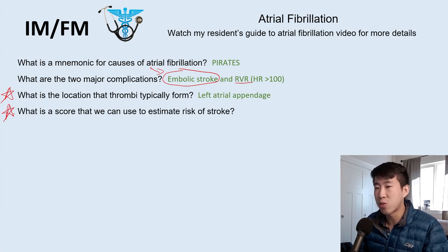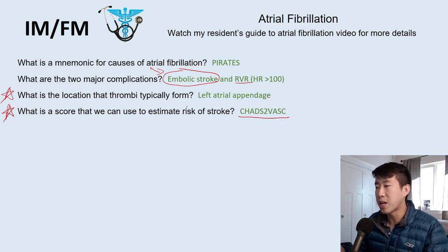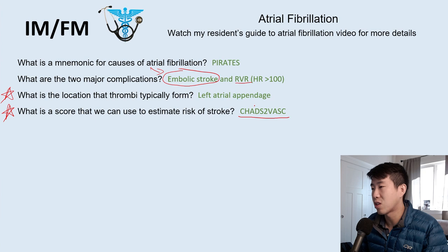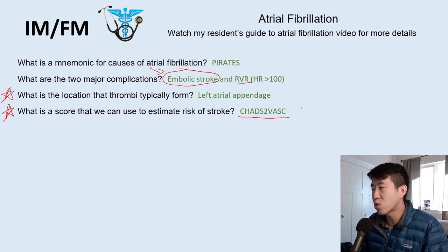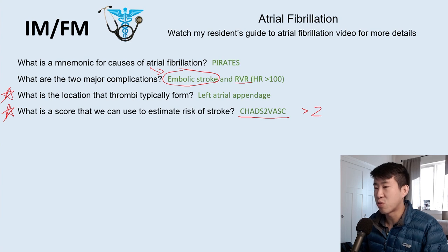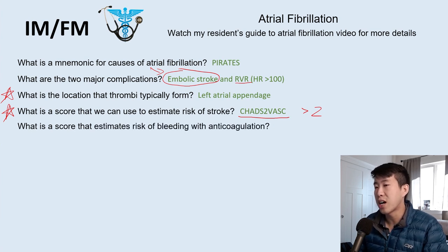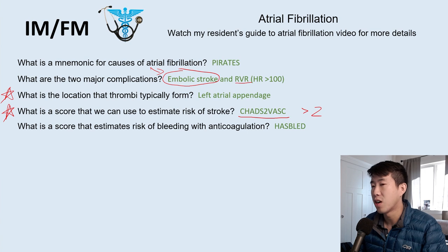The CHADS-VASC score estimates stroke risk and you definitely need to know it. Risk factors include congestive heart failure, hypertension, age greater than 65, diabetes, stroke, vascular disease, age greater than 75, and sex category — being female gets an extra point. A score greater than 2 is usually an indication to anticoagulate. On the flip side, the HAS-BLEED score estimates bleeding risk if we start anticoagulation. But the CHADS-VASC score is the one you definitely need to know.